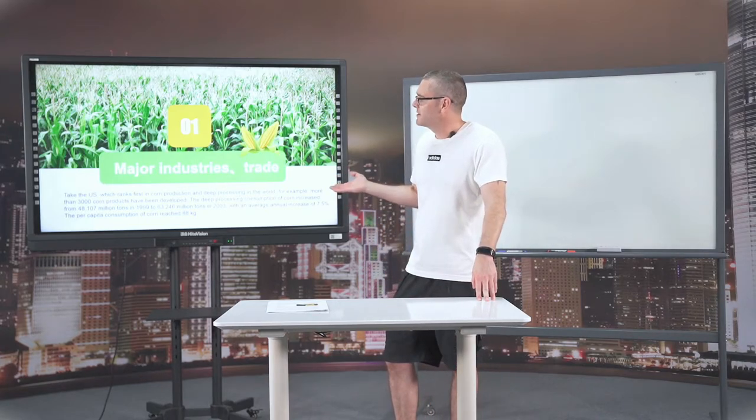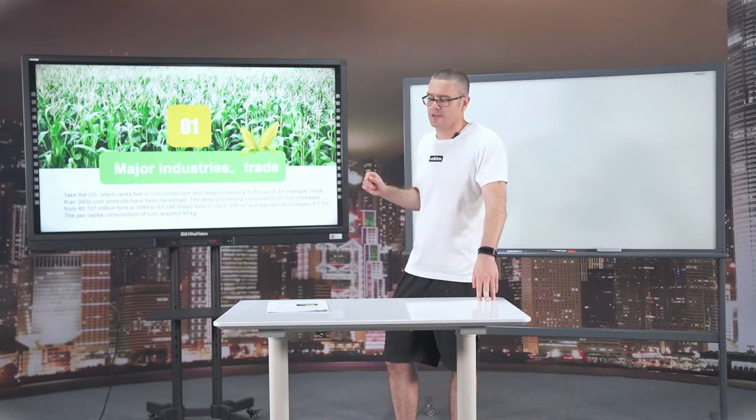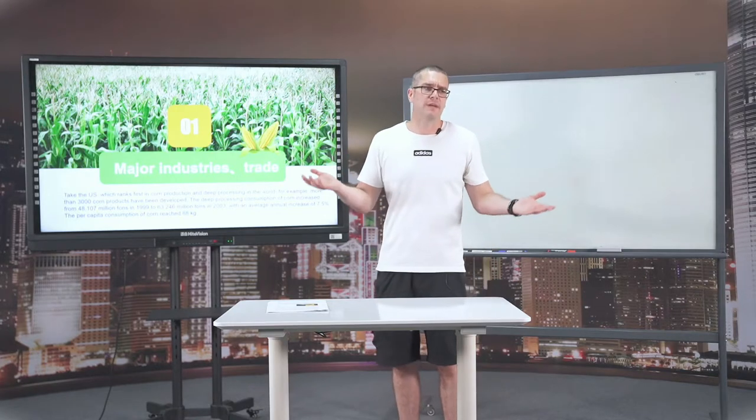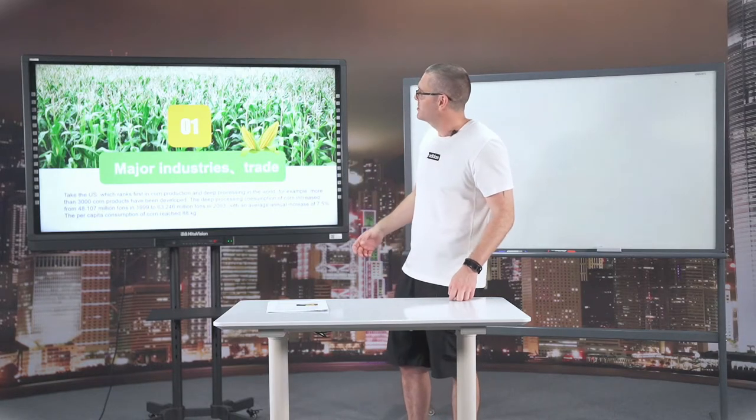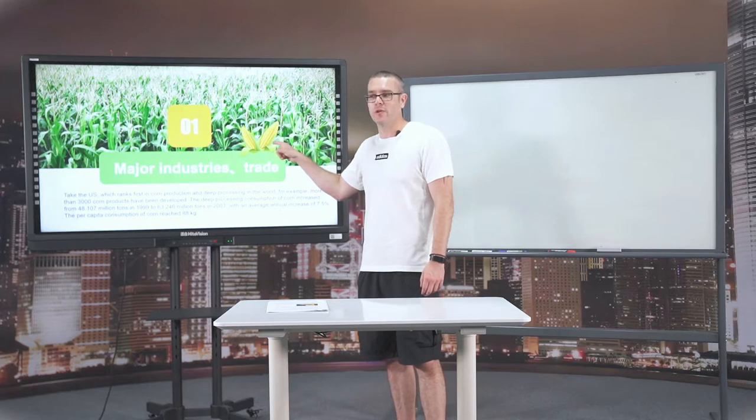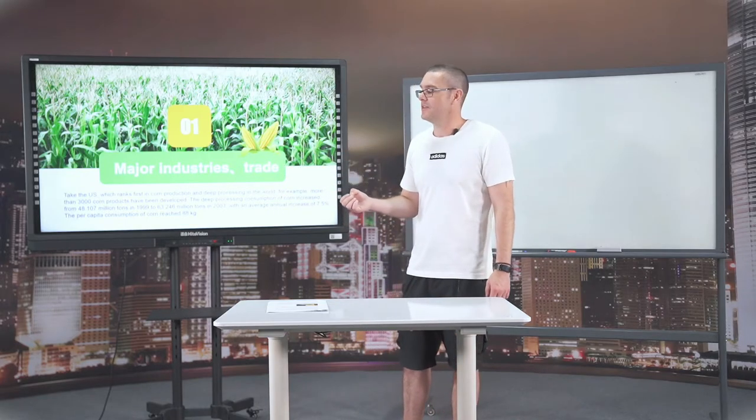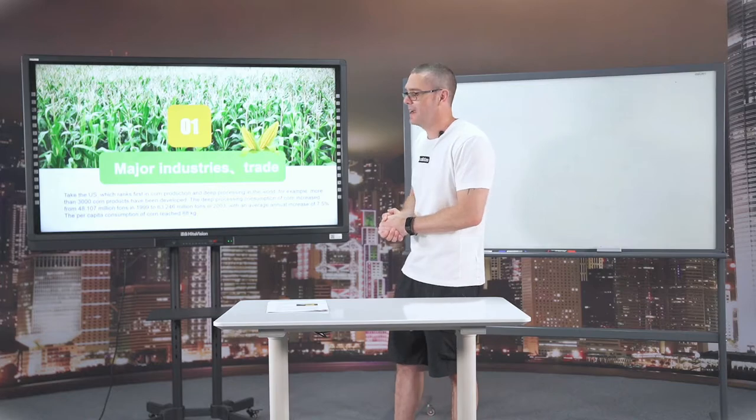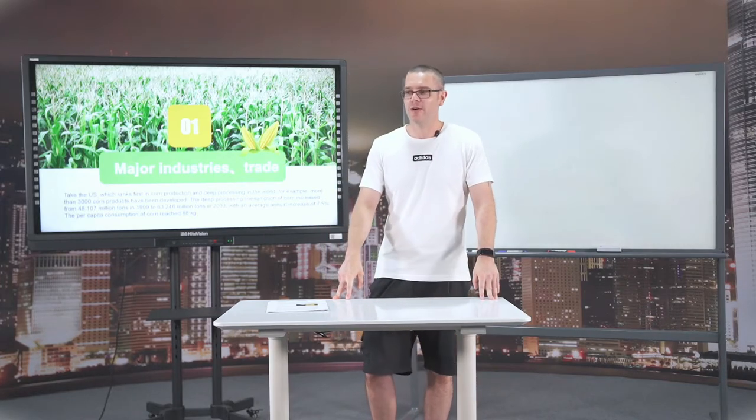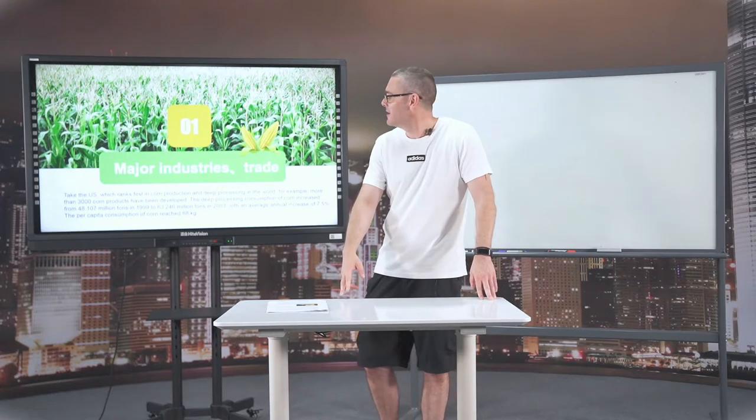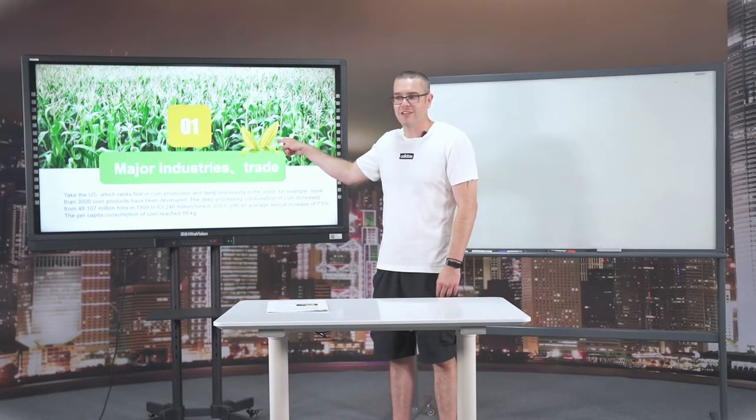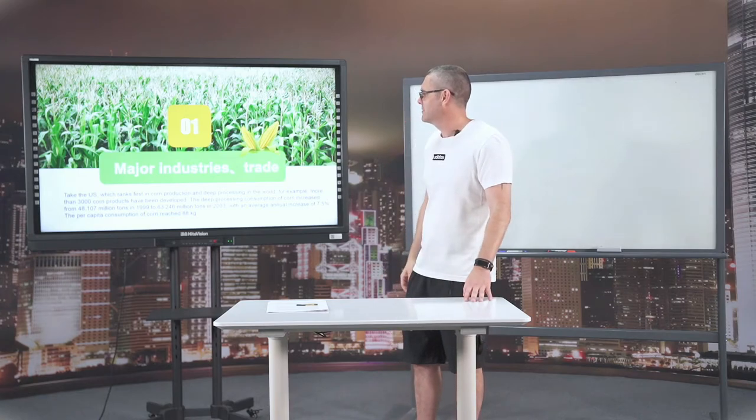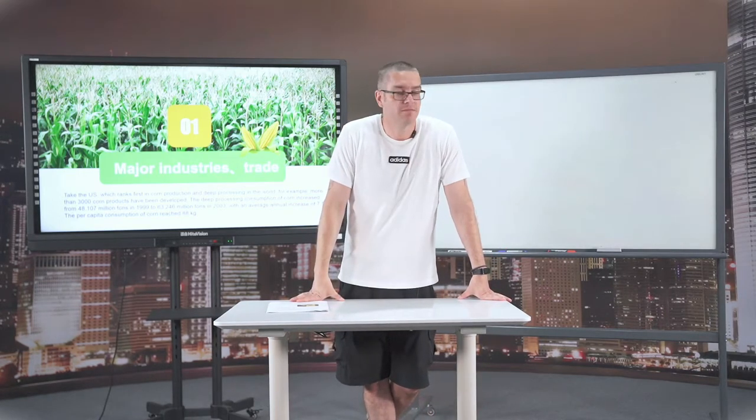The number one producer of corn products is America. Not because it's a big country, but they have worked out how to turn this simple corn into something else. This is gonna sound a bit crazy, but they have developed more than 3,000 different products you can make from that. That is impressive, what you can make from a corn.